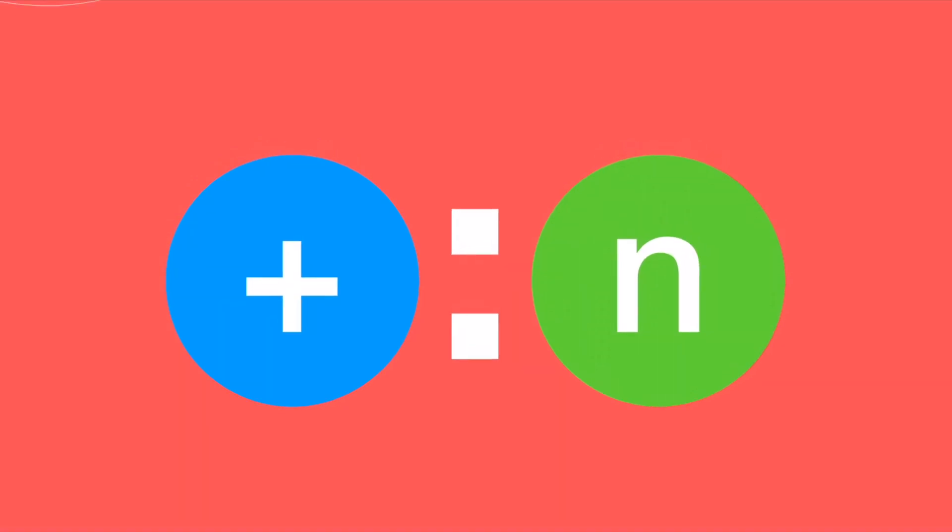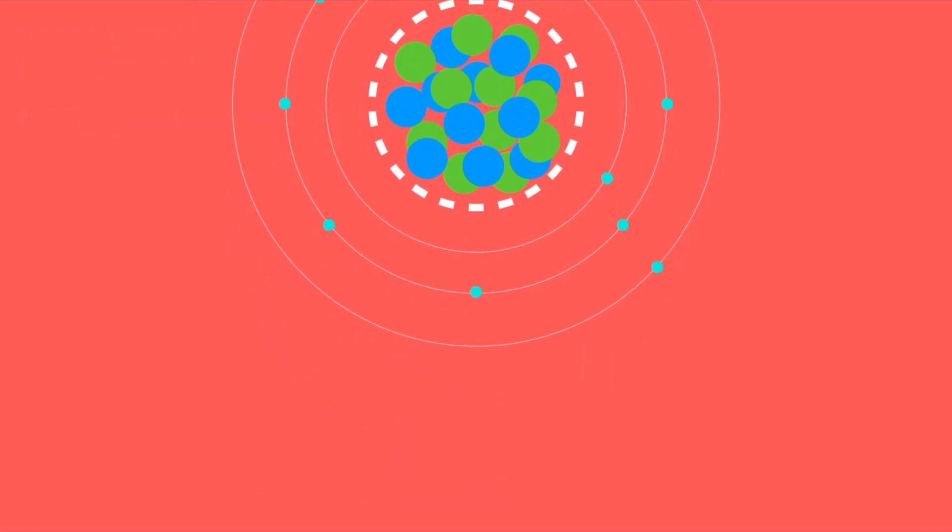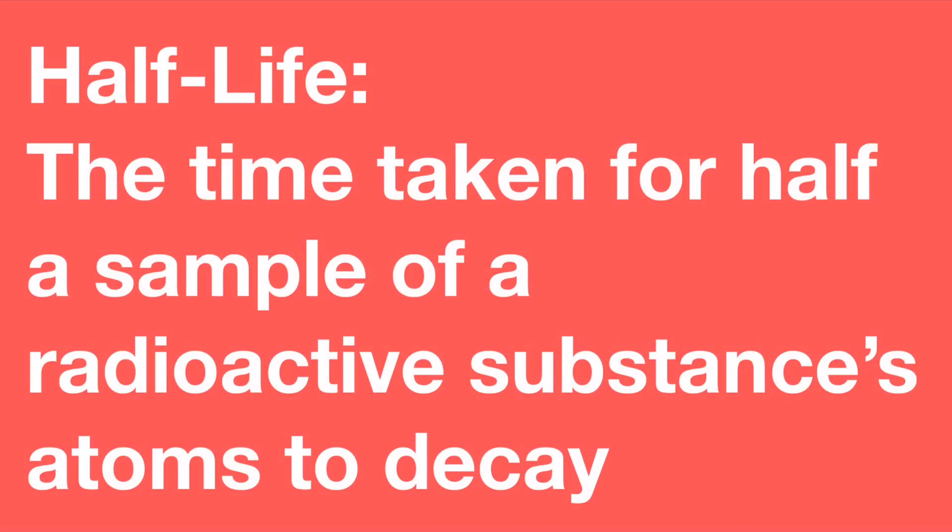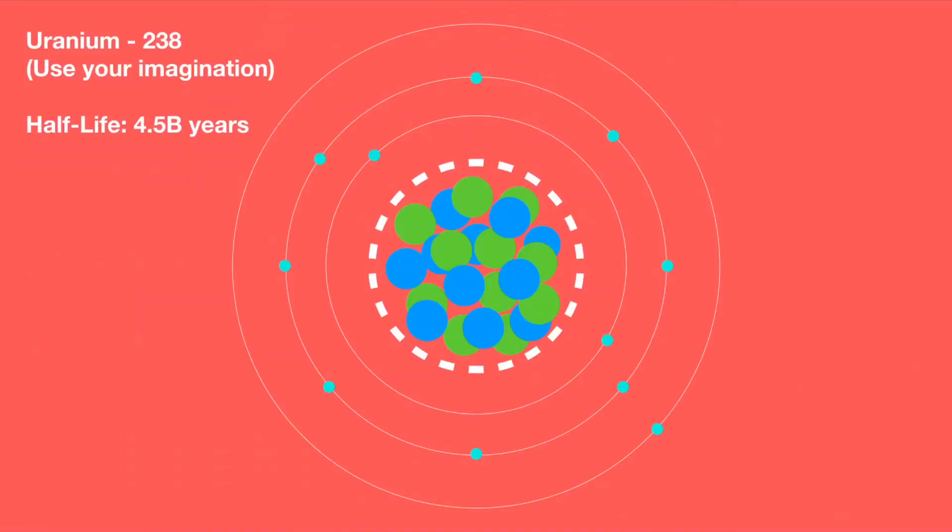Which forms of radiation, you ask? Well, to answer that question, we'll have to study an atom of uranium-238 as it slowly and randomly decays. Uranium-238 has a half-life, that is to say the time taken for half a sample of a radioactive substance's atoms to decay, of 4.5 billion years. But each atom spontaneously and randomly emits radiation, so we'll have to watch it carefully.